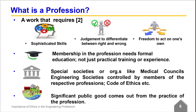First, a profession requires sophisticated skills, the use of judgment, and exercise of discretion — that is, to differentiate between right and wrong — and the freedom to act on one's own. Second, membership in the profession needs extensive formal education; it is not just practical training or apprenticeship. Third, there are special societies or organizations like medical councils or engineering councils that are controlled by members of the respective professions, and they set the standards or code of ethics to enforce these standards. Finally, significant public good results from the practice of the profession.